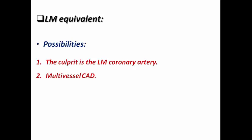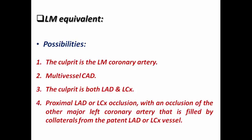What are the possibilities for left main equivalent? The first possibility is left main infarction, where the culprit vessel is the left main coronary artery. Multi-vessel coronary artery disease is another possibility, where the patient has multi-vessel significant coronary artery disease as a new insult or long-standing infarction, with both LAD and LCX as culprits. Sometimes proximal LAD or LCX occlusion occurs with occlusion of a major left coronary artery that was filled by collateral from the patent LAD or LCX, so two vessels become affected because one was dependent on the other for collateral circulation.